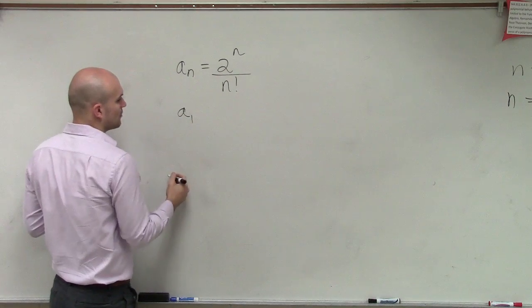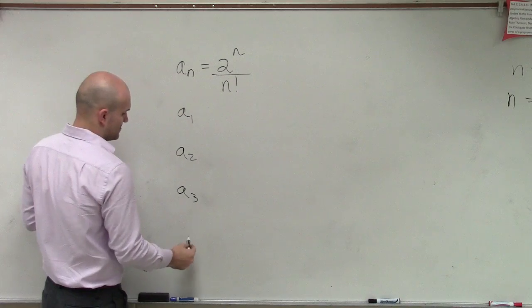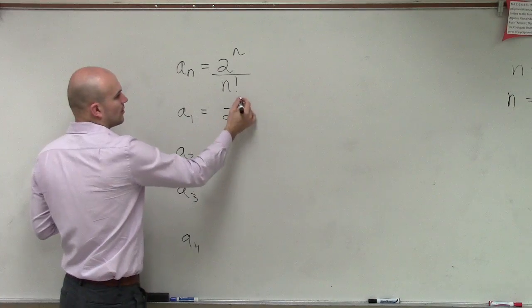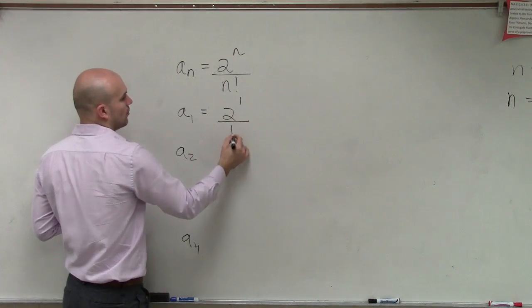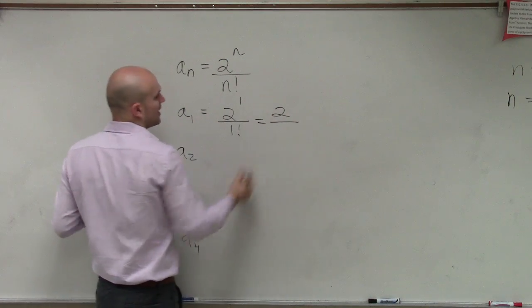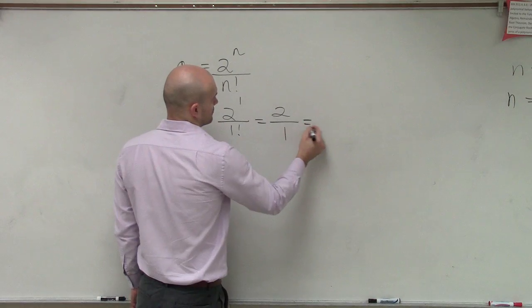So we need to figure out a sub 1, a sub 2, a sub 3, and a sub 4. So a sub 1, we take our value of 1, and then we do 1 factorial. Well, 2 raised to the first power is just 2, and 1 factorial would be 1, equals 2.